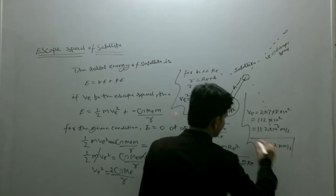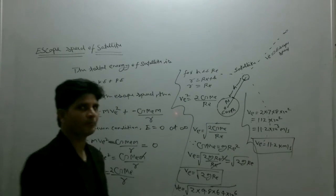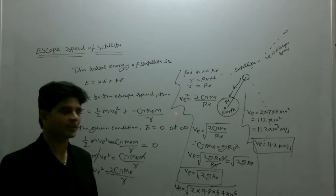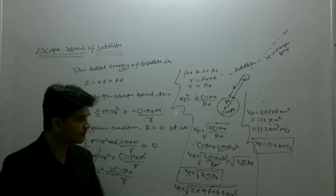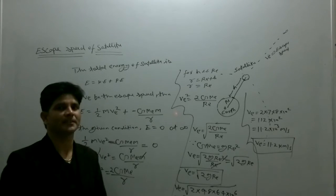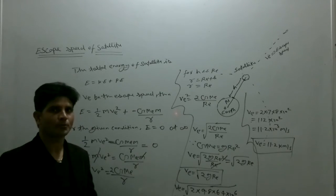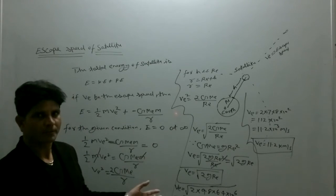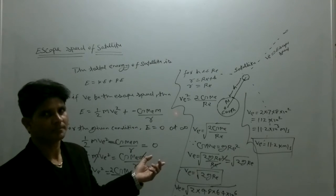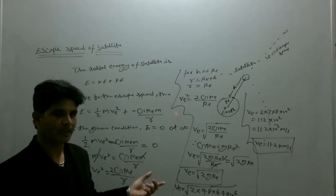In kilometers, it is 11.2 kilometer per second. The escape speed of satellite or any object on the surface of earth is equal to 11.2 kilometer per second. It means if we throw an object with a speed of 11.2 kilometer per second from the earth's surface, it reaches to the infinity after crossing the gravity of earth.